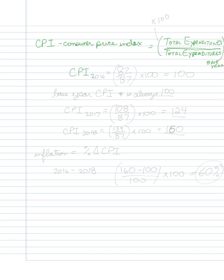I'm going to have 87 over 87, and then we multiply this by 100, and that gets us 100. Times 100. The base year CPI number is always 100.